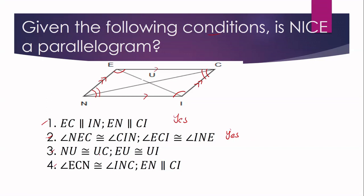Number three: NU is congruent to UC, and EU is congruent to UI. Based on this, yes, NICE is a parallelogram. The condition that guarantees this is that the diagonals bisect each other.